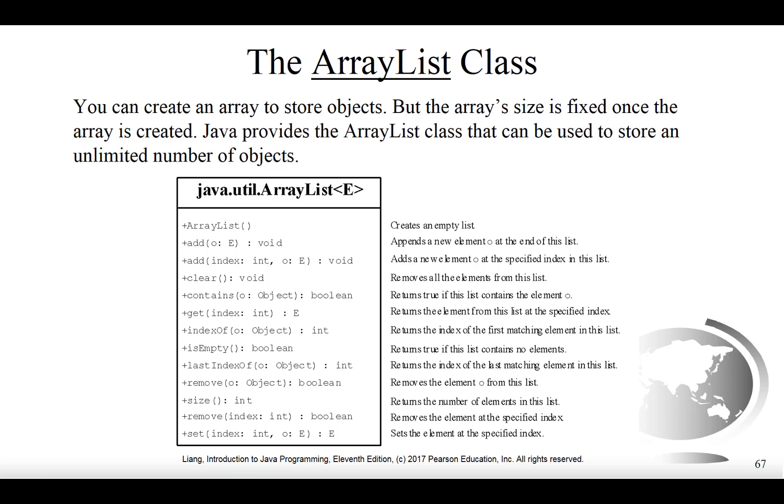You can actually check to see if the ArrayList contains a particular element with a certain value by using contains. We can get the value at a particular index in the array. We can find the index of a particular element in the array, and we can check to see if the array is empty.